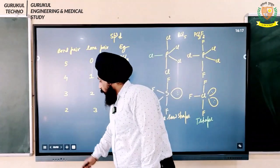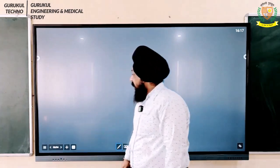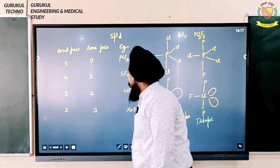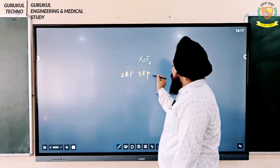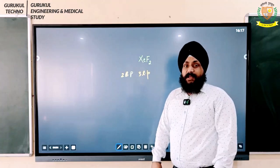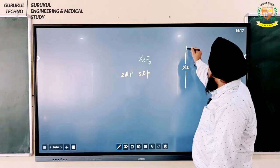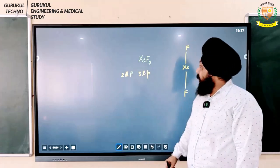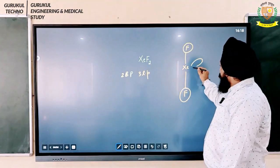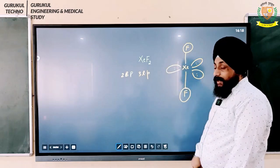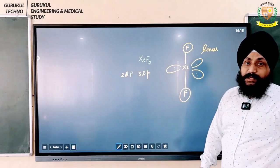Another example is XEF2, xenon difluoride. It has two bond pairs and three lone pairs, giving a sum of five, so hybridization is SP3D and geometry is trigonal bipyramidal. Fluorine, being more electronegative, occupies the axial positions. The three lone pairs occupy the equatorial positions. Therefore the shape of XEF2 is linear.